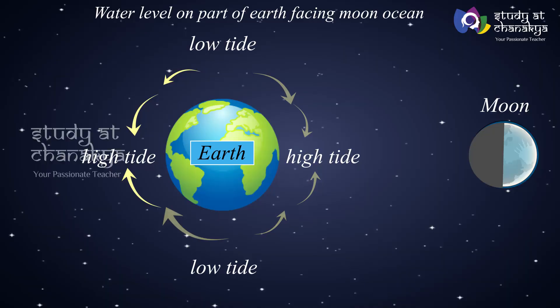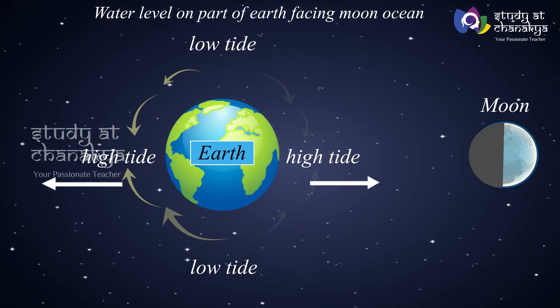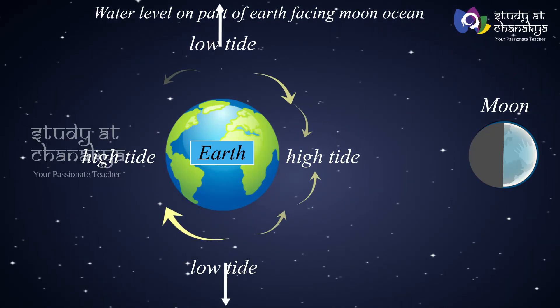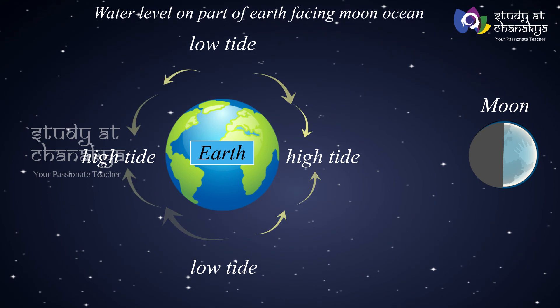Tides are the periodic rise and fall of water level in the ocean. The rise of water level is known as high tide and the lowering of the water is known as low tide. The reasons for tides are the centrifugal force exerted on the earth due to its rotation, and the gravitational force of the moon and the sun.